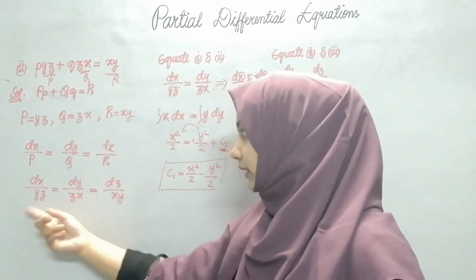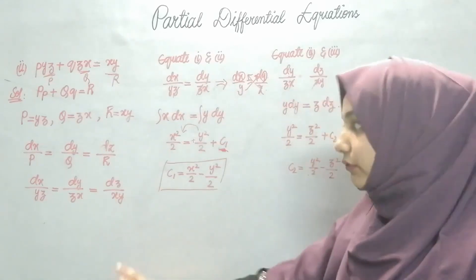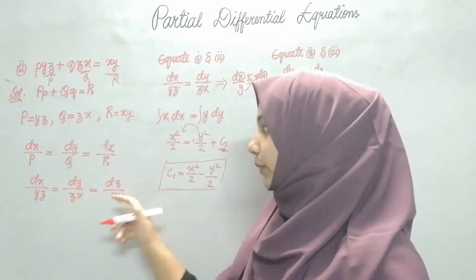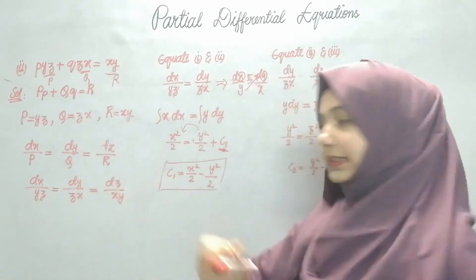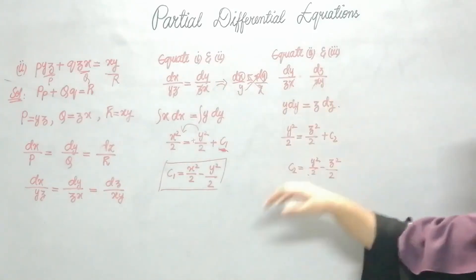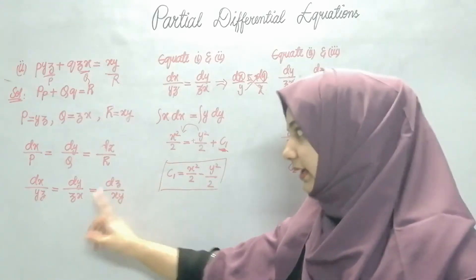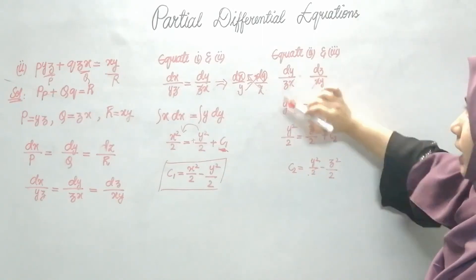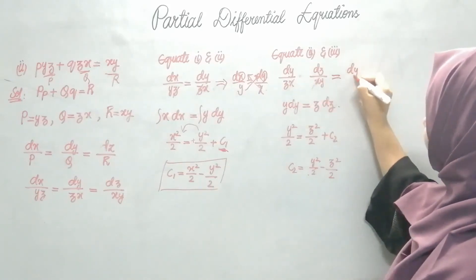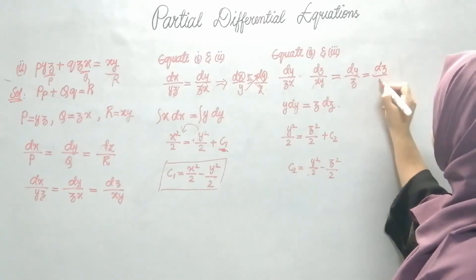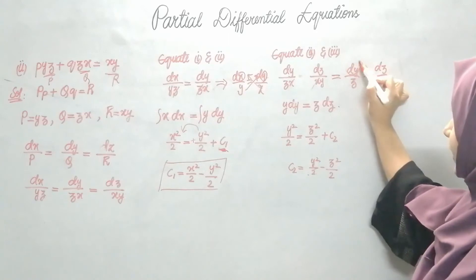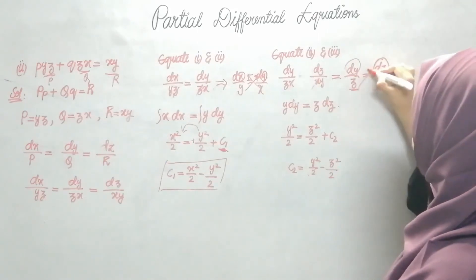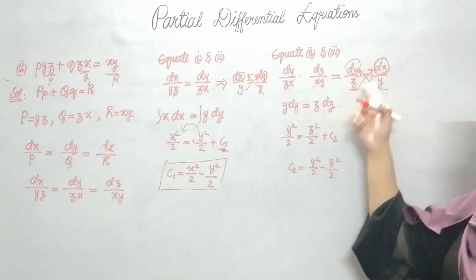For Step 2, I take the second and third members: dy/zx = dz/xy. Here x and x cancel, leaving dy/z = dz/y. I cross-multiply to get y · dy = z · dz. Similarly, if you had taken the first and third, y and y are common and you'd cancel those, then cross-multiply x · dx = z · dz.